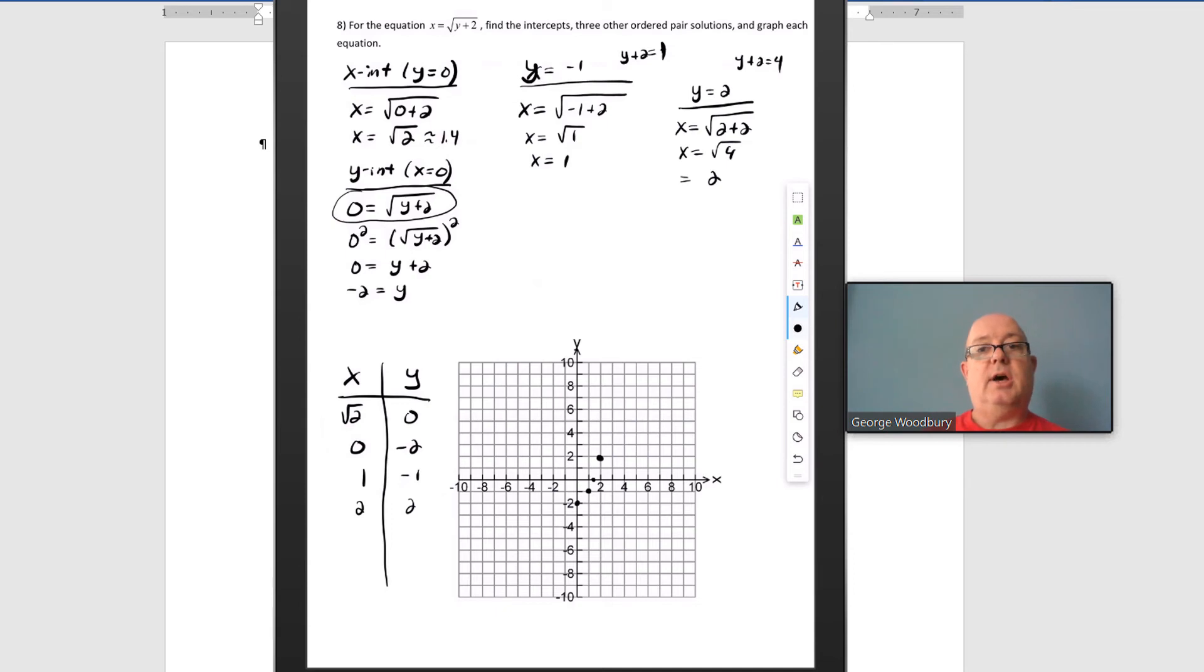And finally, I know the square root of 9. So what makes y plus 2 equal to 9? 7 does. So let's try 7. x equals square root of 7 plus 2, x equals root 9, x equals 3. So 3 comma 7 is our third extra point. And there's the points to work with.